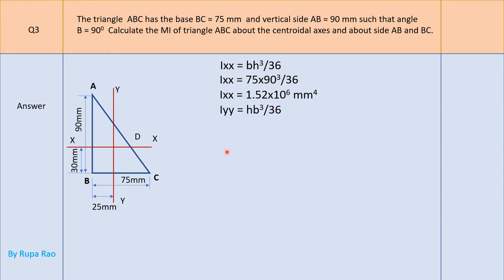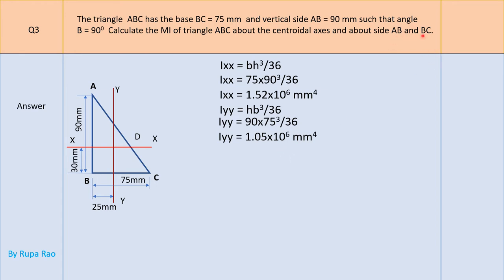For Iyy, because angle B is 90°, the formula becomes HB³/36. Here H = 90 and B = 75. Substituting: 90 × 75³ / 36. On the calculator: 90 × 75, press X³, divided by 36, equals — you get Iyy = 1.05 × 10⁶ mm⁴.